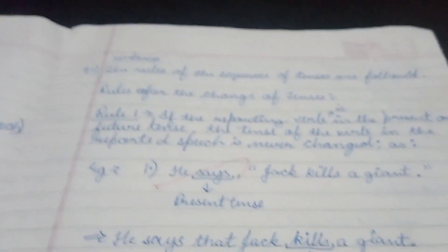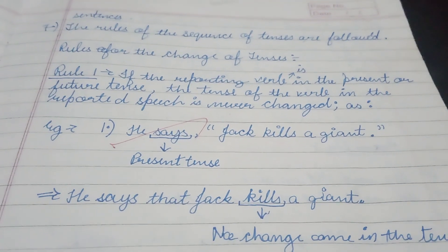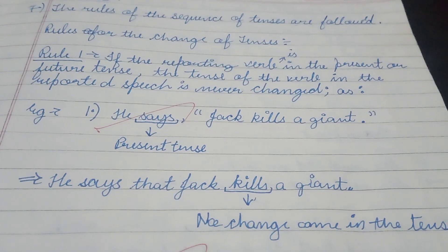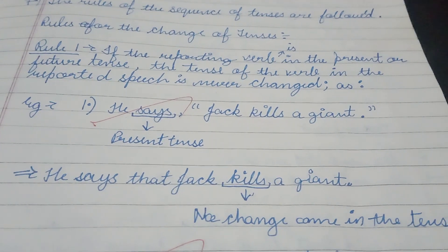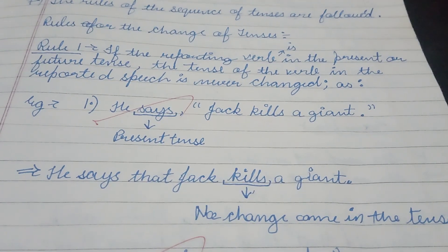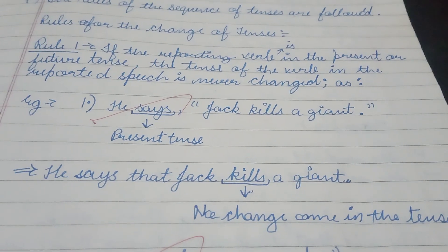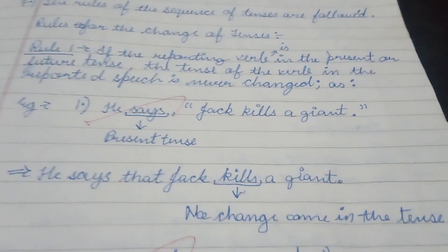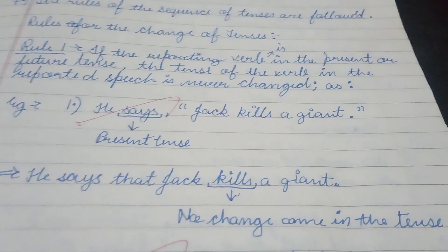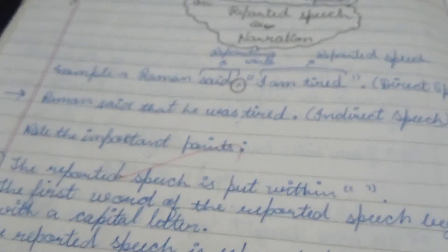Let's move to the next topic — rules for the change of tenses. Rule 1 is: if the reporting verb is in the present or future tense, the tense of the verb in the reported speech is never changed. Before moving to the example, the rule says that if the reporting verb is in present or future tense — such as 'he says' or 'he will say' — then the tense of the verb inside the reported speech is never changed.